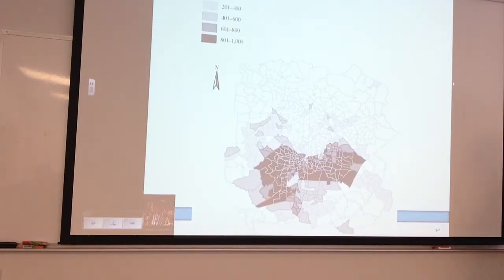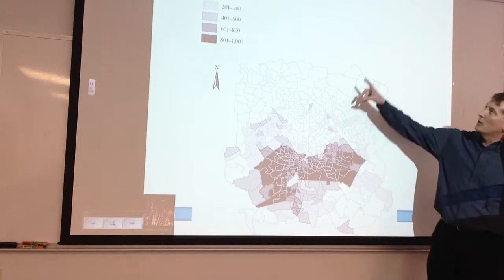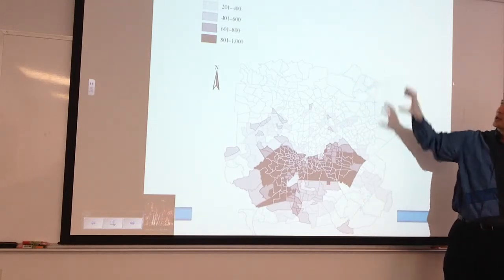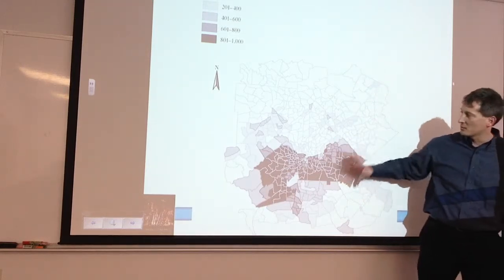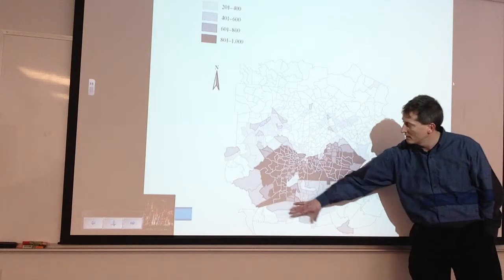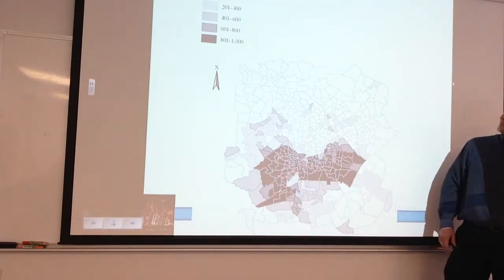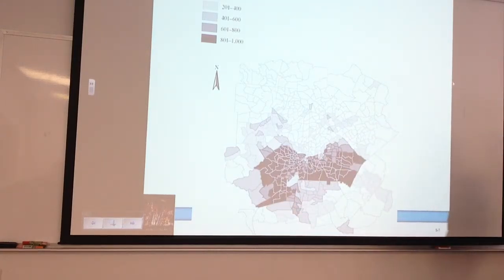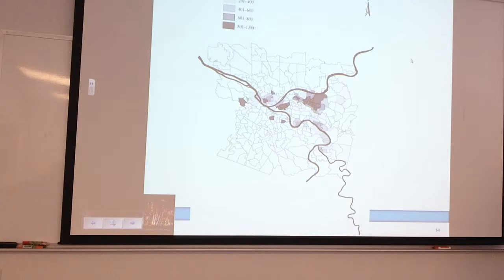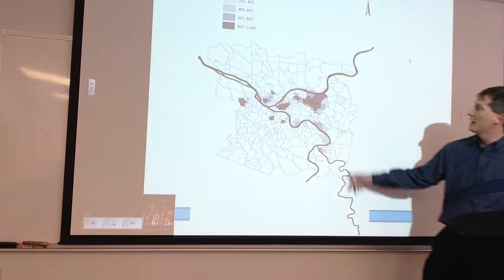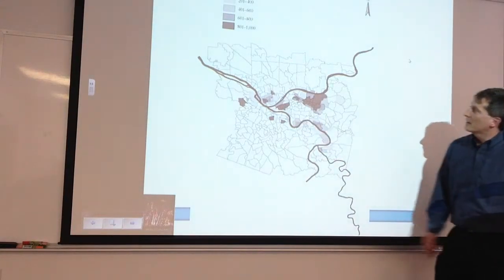Here's Atlanta racial segregation — again, similar concept: blacks per thousand over the whole Atlanta area. And here's Pittsburgh — these ribbons are the highways cutting through.